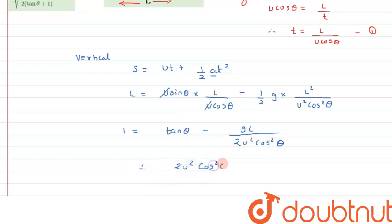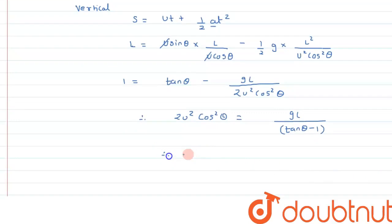2u squared cos squared theta will be equal to gL upon tan theta minus 1. All right, so from here we can see, therefore the value of u squared will be written as gL upon tan theta minus 1 into 1 over...